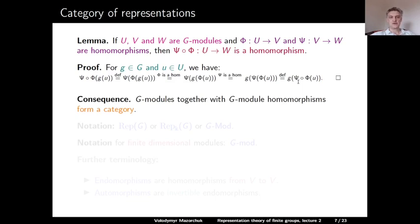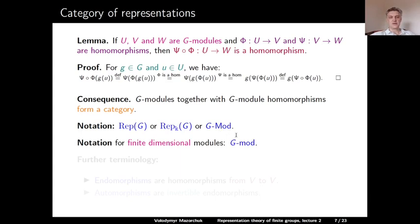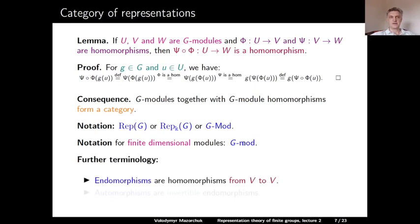Consequence: all G-modules together with all homomorphisms of G-modules form a category. This category is denoted Rep(G), or Rep_K(G) if we work over a field K and want to specify it, or G-Mod (capital M) for all modules, or G-mod (small m) for finite-dimensional modules. Endomorphisms are homomorphisms from a module to itself, and automorphisms are invertible endomorphisms. We will often use these words in the course.